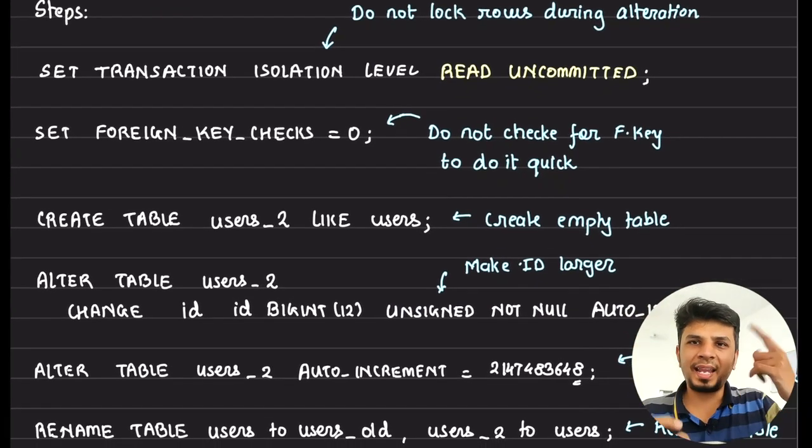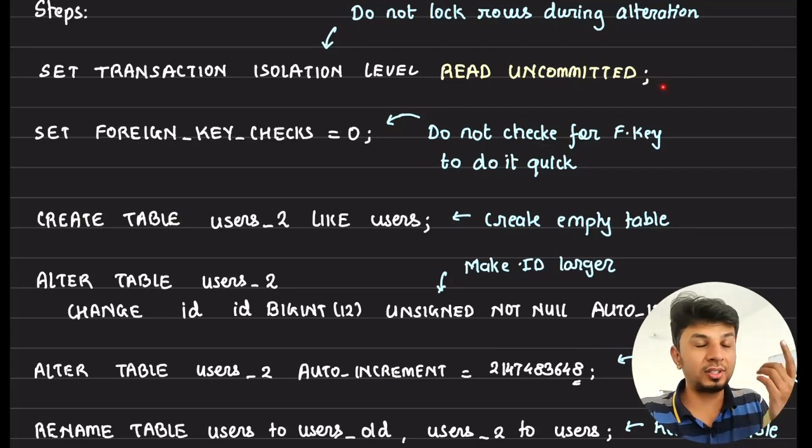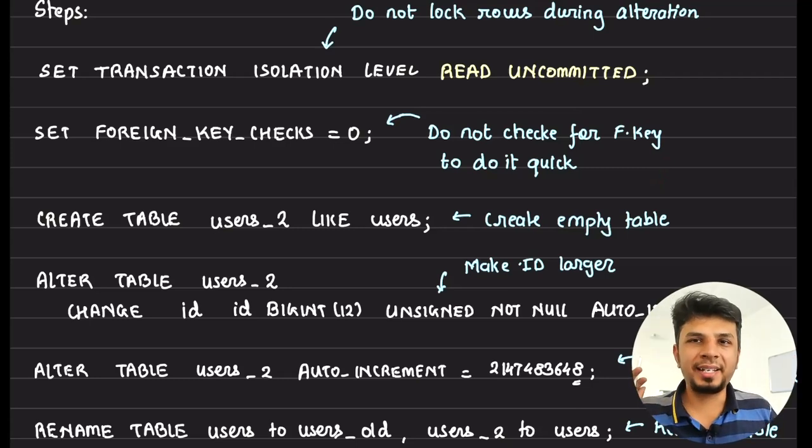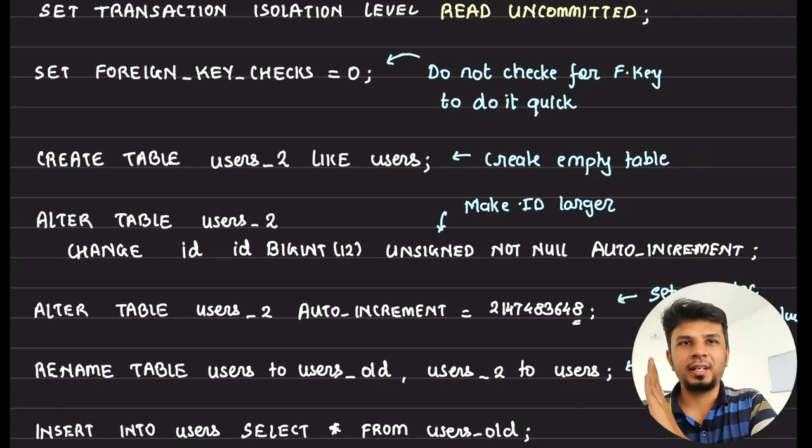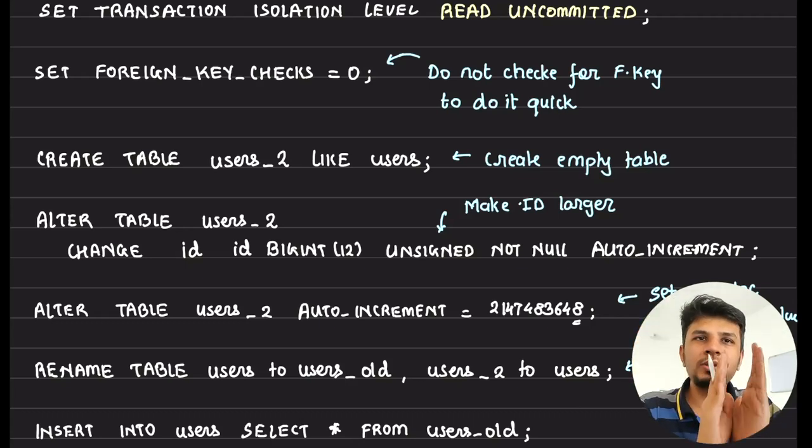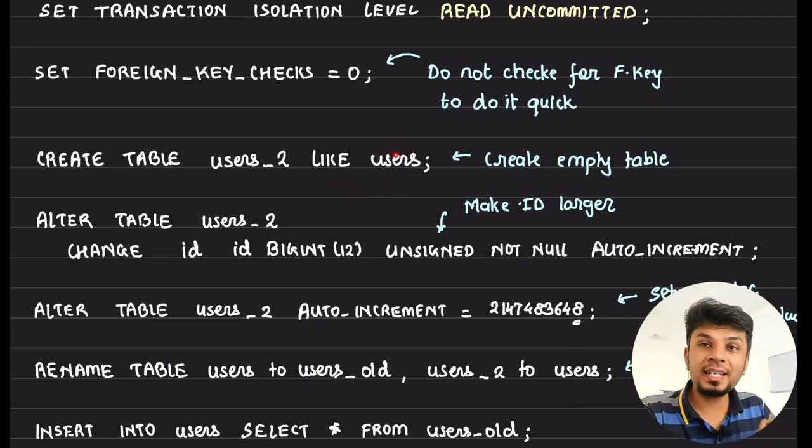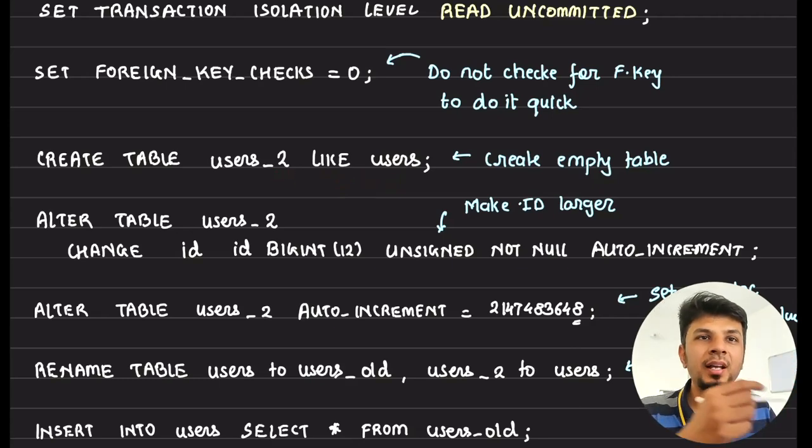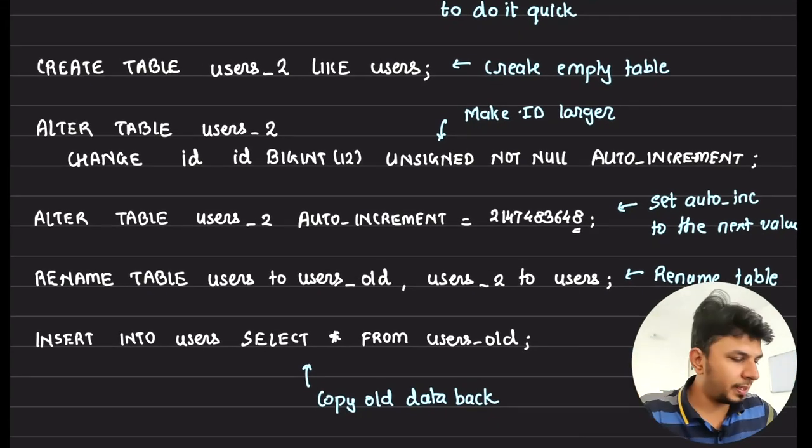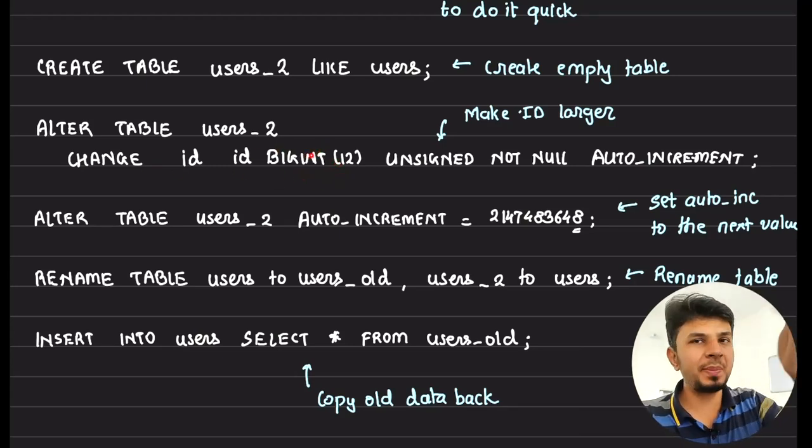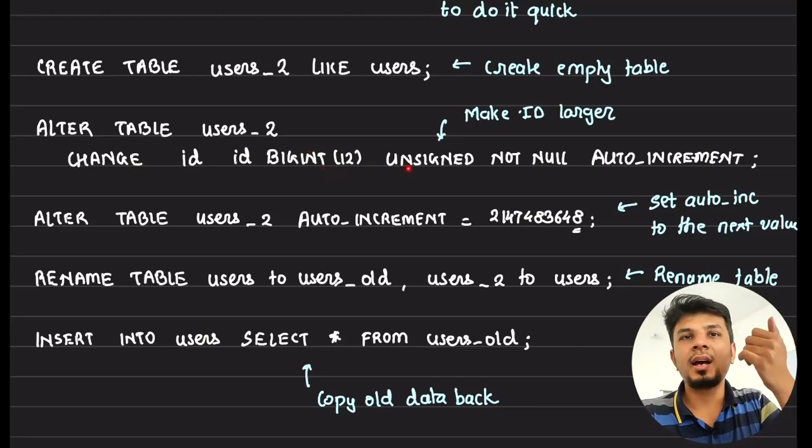So the steps are, again, no locks. We set transaction isolation level to read uncommitted so that it goes at a very fast pace. We disable the foreign key checks. Now comes the next part. We create a table, let's say users table had an outage, like its limit reached. So we create another table called users_2, like users, which means it will have the same schema, the same schema as your users table. So users_2 and users now have the same schema. Now what we do is we alter the users_2 table and make integer bigger. Similar to how we did in the previous approach, we make integer bigger over here. Integer becomes big int, unsigned. So 2 raised to 64, 0 to 2 raised to 64, humongous value we have. No worries.